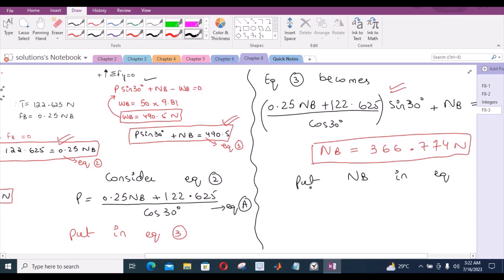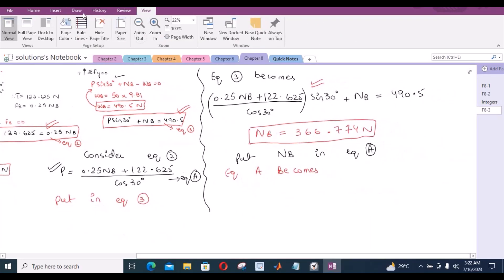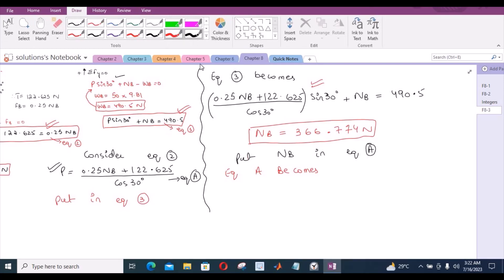So put NB in equation A, in this equation. So equation A becomes P is equal to 0.25 times 366.774 plus 122.625 divided by cos 30. So from here, P becomes 247.4 Newtons. This is the answer that we are looking for.